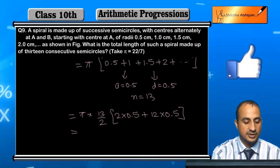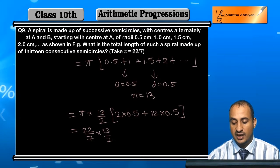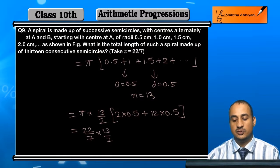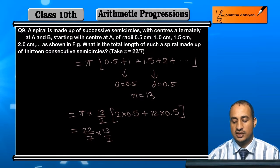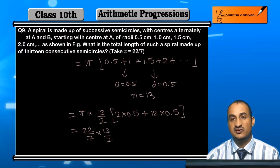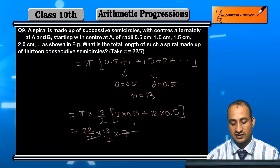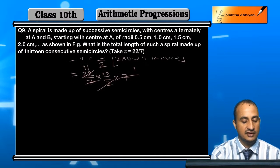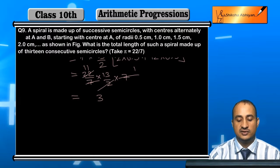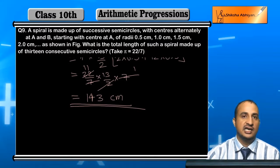So what goes on: pi times 22 by 7 into 13 by 2. What do I take from inside? 2 into 0.5 is 1, 12 into 0.5 is 6, 1 plus 6 is 7. 7 will cancel out, 2 will cancel out. 11, 13, 13 is this. 143 cm. This is the length of the spiral.